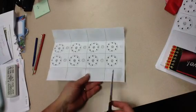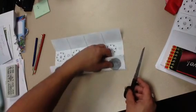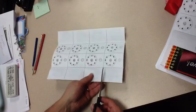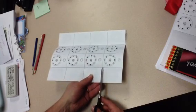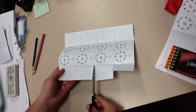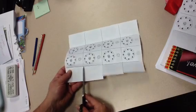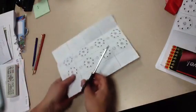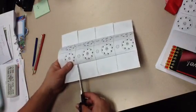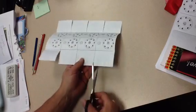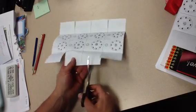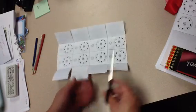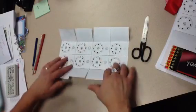We're going to make little flaps so that we can open and shut each of the moons. So we need to cut each of these lines up to the fold that we just made. There we go.